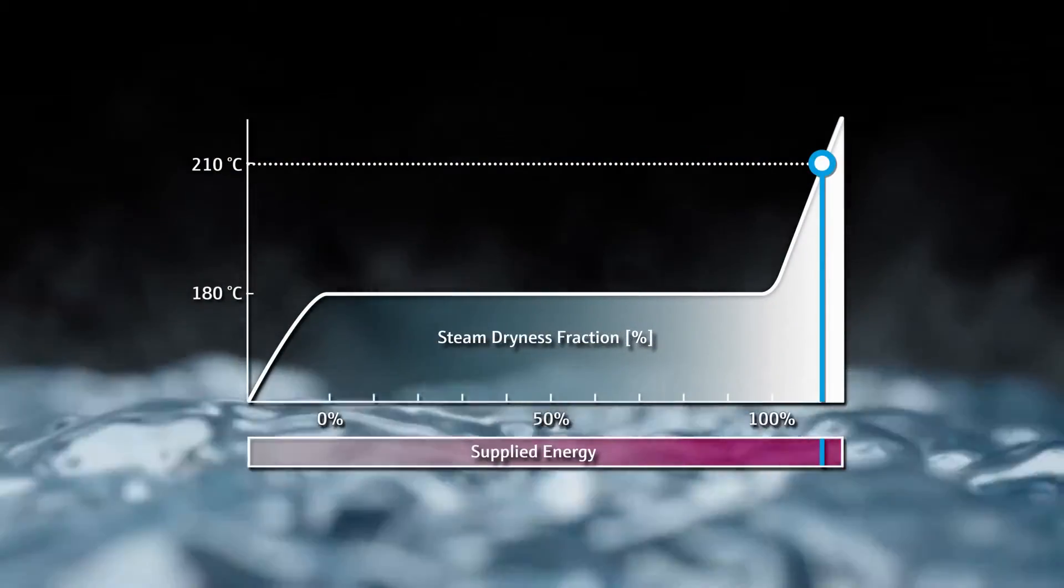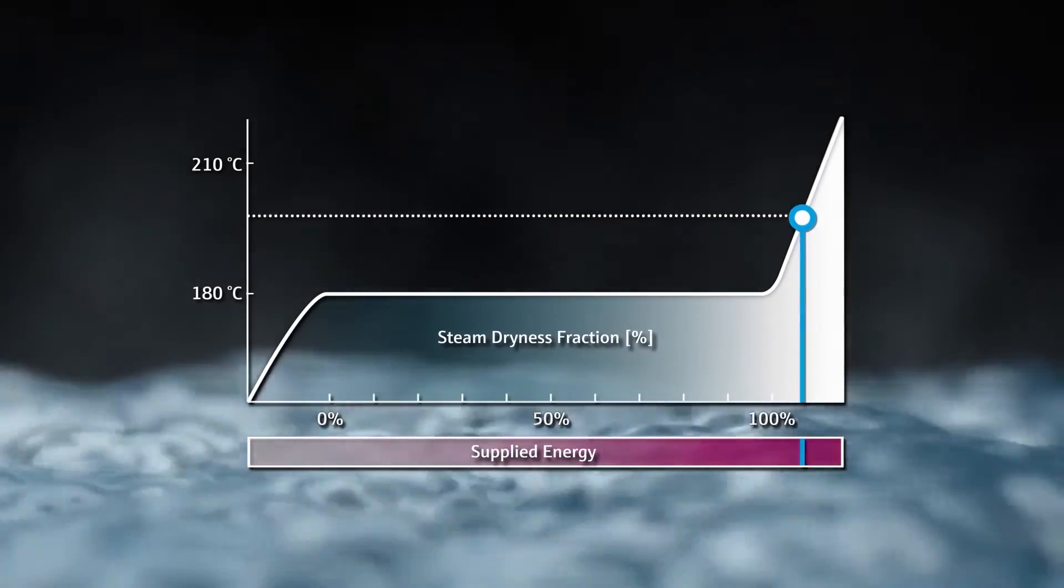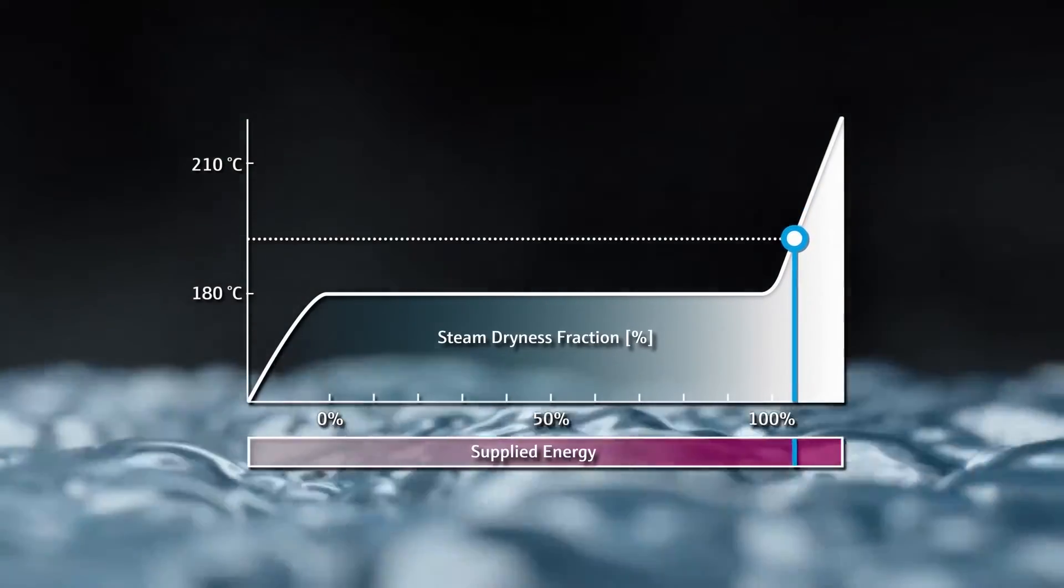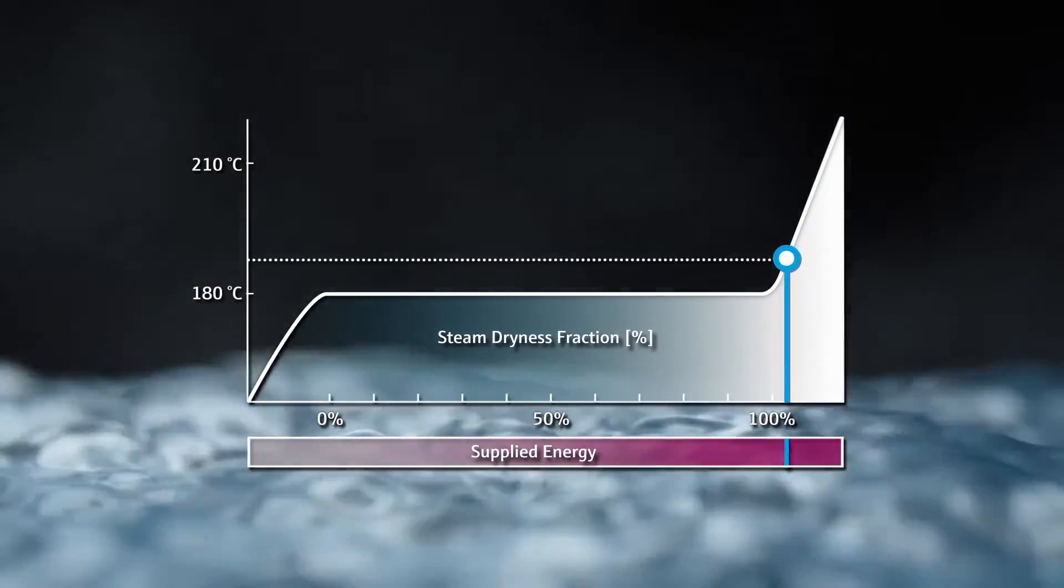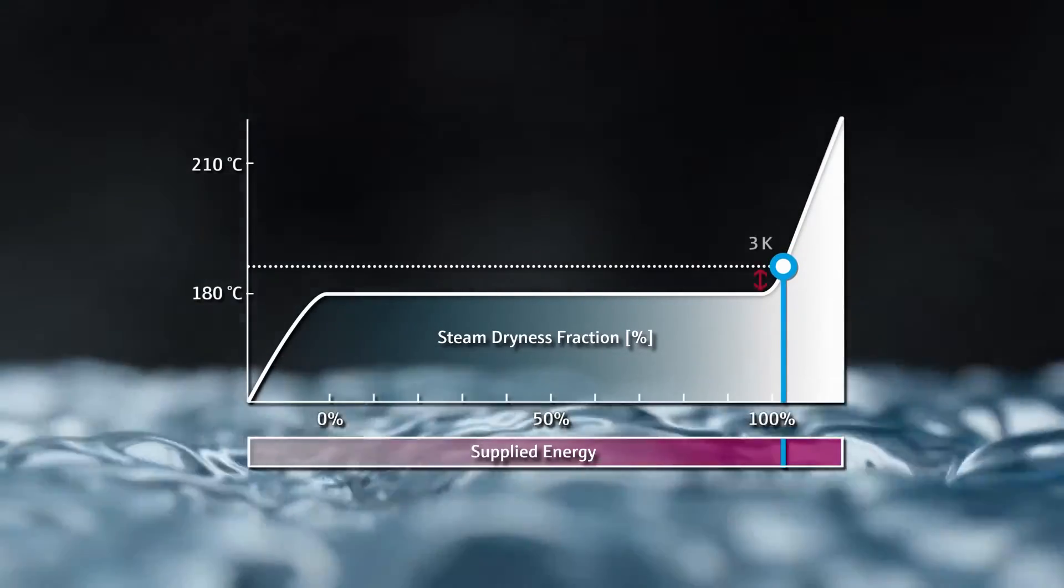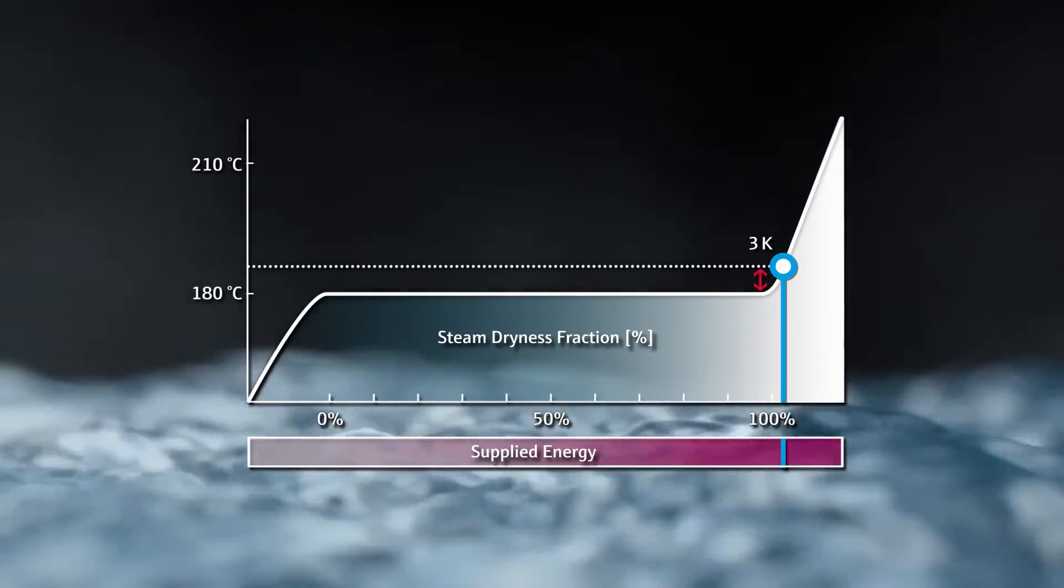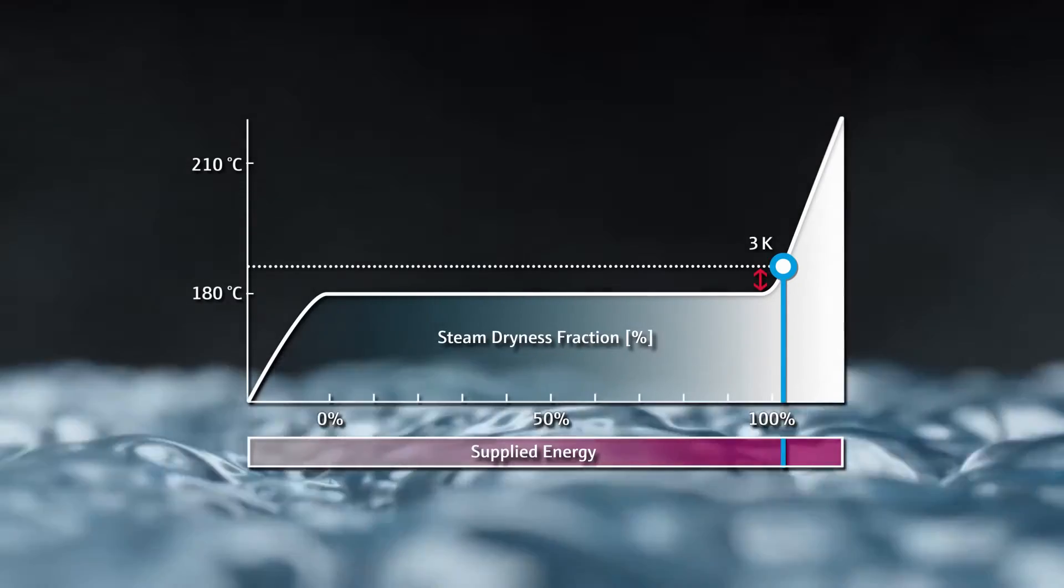Here too, Prowold 200 warns you in time. If the superheated steam falls below the temperature values specified by the device and is close to the saturated steam point, Prowold 200 immediately indicates this with a warning message.